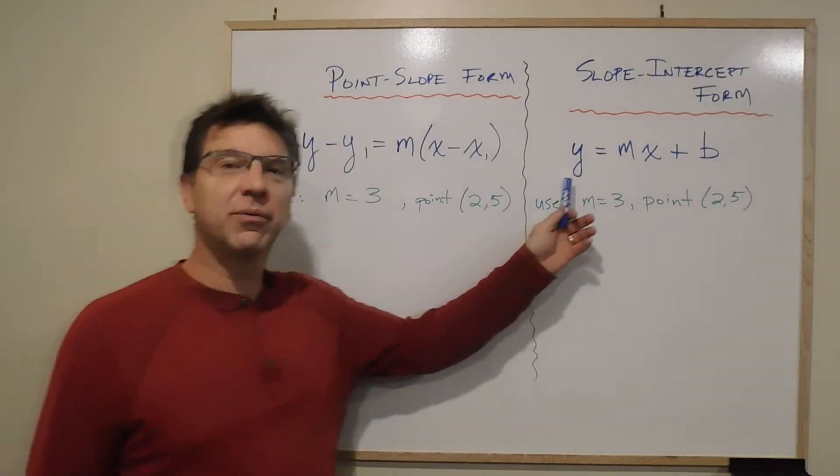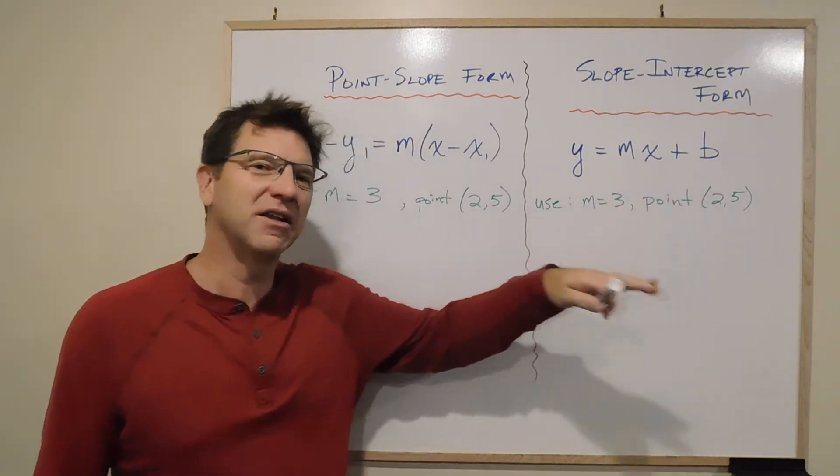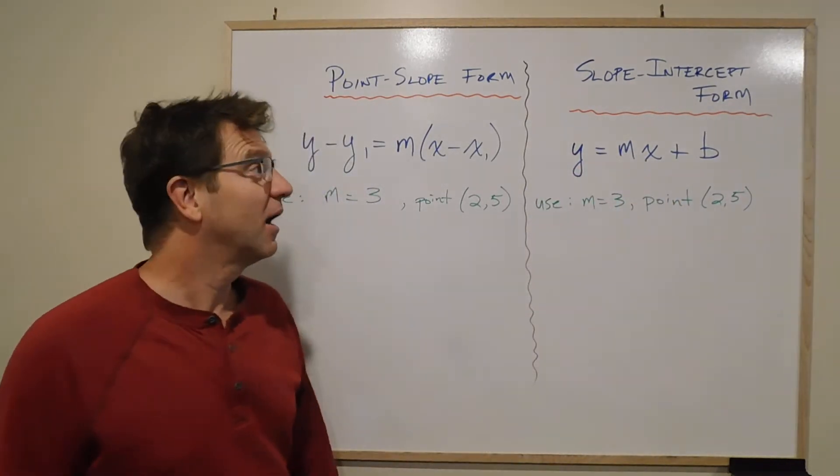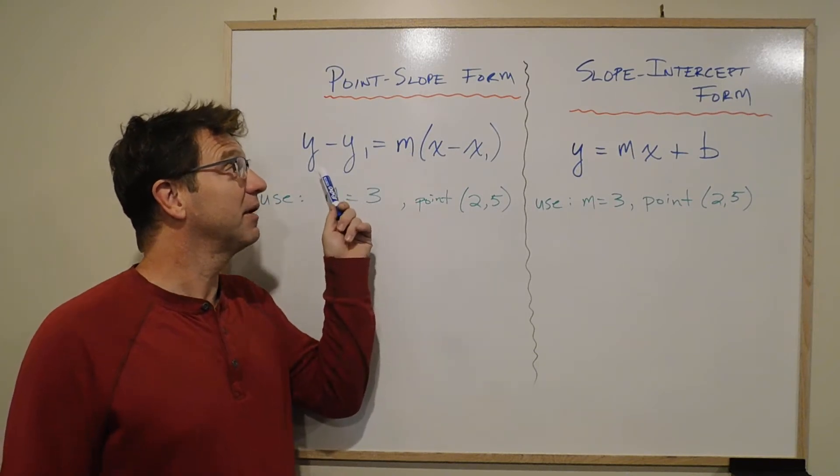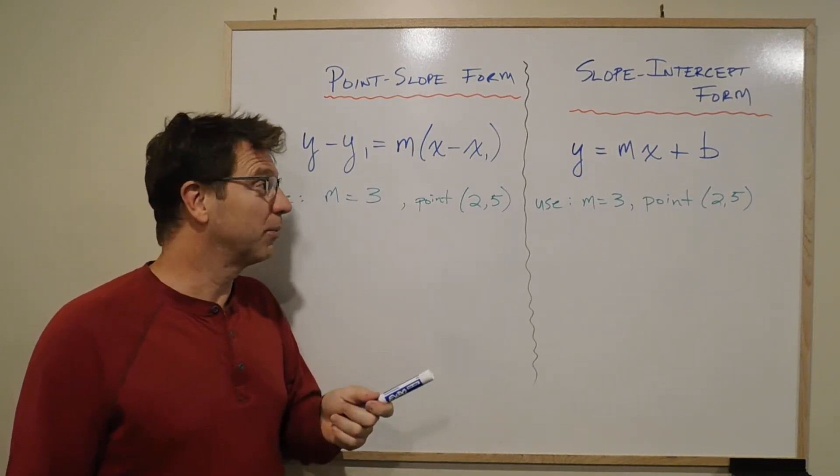What's point-slope form and slope-intercept form? And this one's the one that's way more common, y equals mx plus b. This is the one that you see that you're likely taught in high school. But this is another one. Both of these require you to know a point and a slope.